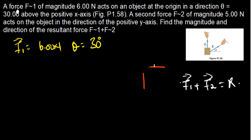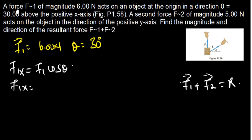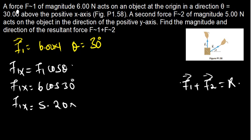So now we are resolving F1 into x and y components. To resolve any vector into its x component, we use F1x = F1 cos theta. So F1x = 6 cos 30 degrees, which gives us 5.20 Newtons. That is the x component of vector F1.